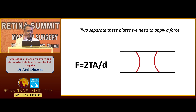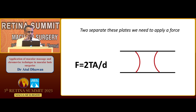If we take two glass plates separated by a thin layer of water and want to separate them, we have to apply some force. This force is directly proportional to the area of contact. So if the area of contact is large, the natural adhesive force is more. The application here is: if our flap is large, the chance of spontaneous displacement is less. So we should not be miserly in making the flap.